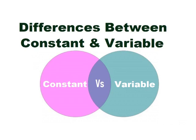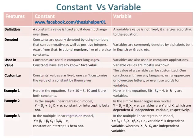Differences between constant and variable. Constant versus variable. A constant's value is fixed and it doesn't change over time, whereas a variable's value is not fixed, it changes according to the equation.